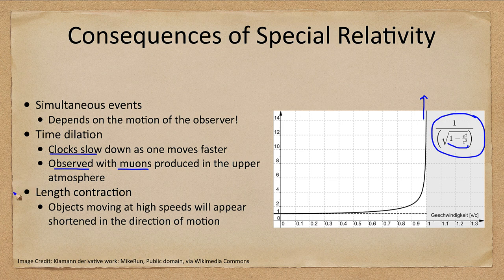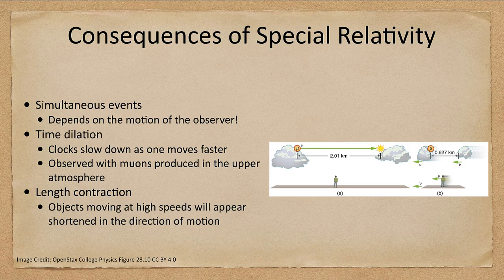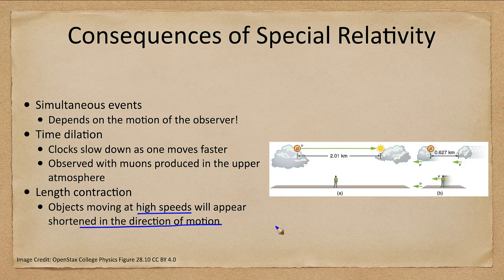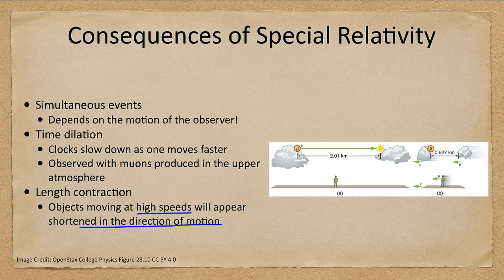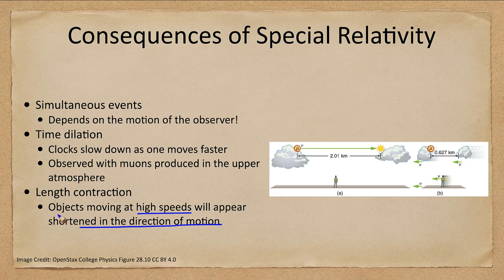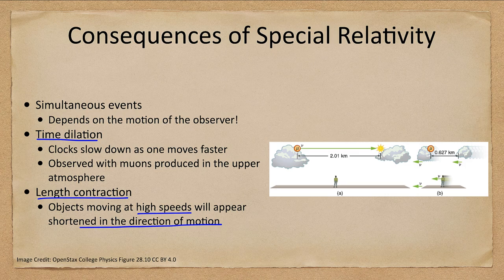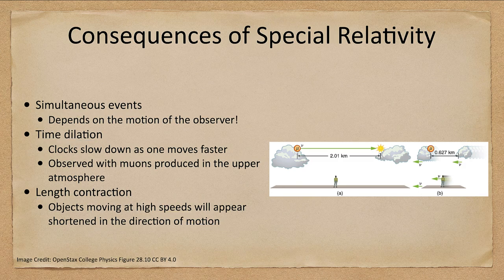We also have length contraction. Time changes, but so do lengths. Objects moving at very high speeds will appear shortened in the direction of motion. Both time dilation and length contraction increase as you get close to the speed of light. At our everyday speeds, these effects make no difference and won't be noticeable.